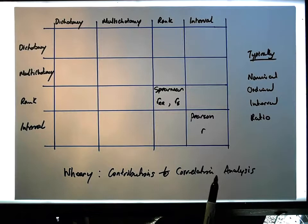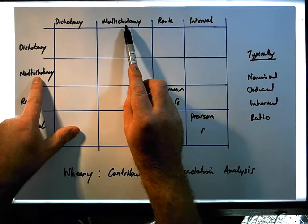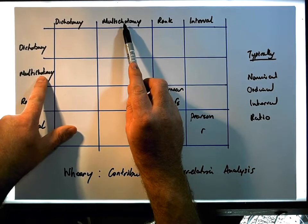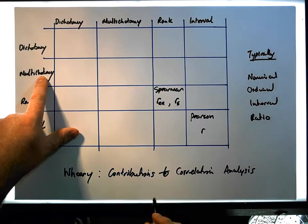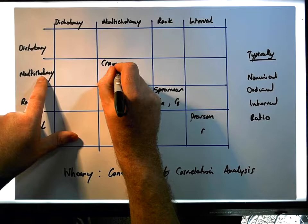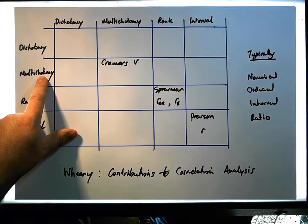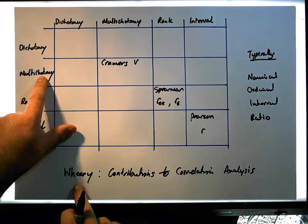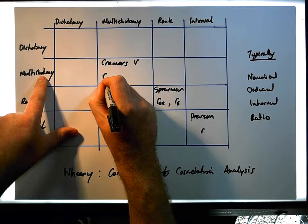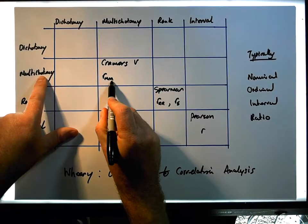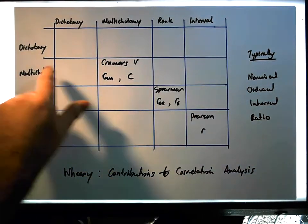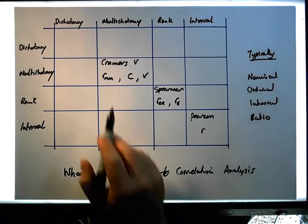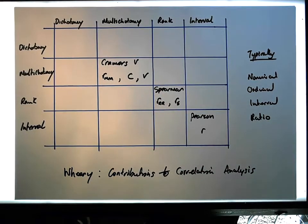When both variables are measured on a nominal scale and both have more than two levels of measurement — both are multichotomies — the typical correlation coefficient to use is known as Cramér's V, labeled R-MM in Weary's notation (M for multichotomy with multichotomy), but typically labeled as V. Different labeling represents the same thing depending on where you read.